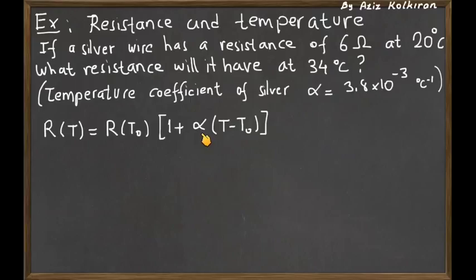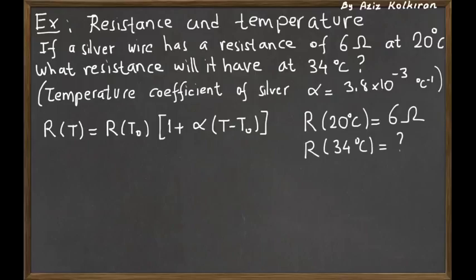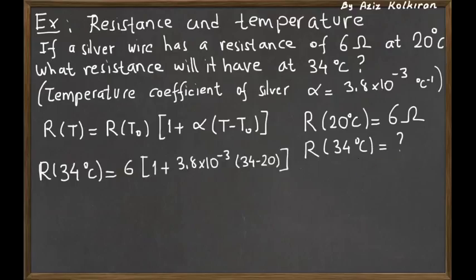We have this plus one in the parentheses. Let's do the calculation. We are given R at 20 degrees is 6 ohms, and R at 34 degrees is not known.